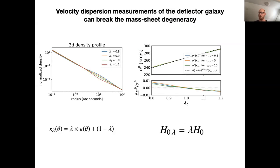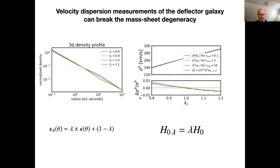The velocity dispersion of the orbiting stars in the lensing potential can break this degeneracy. It's an independent probe of the three-dimensional mass density and thus has an impact on it. You see here for the same 3D density profiles the change in predicted velocity dispersion given a certain transform of the previously assumed mass profile. The not-so-good news is that we need very precise measurements on the velocity dispersion to break this degeneracy, and that level of precision is not yet available for individual lenses today.